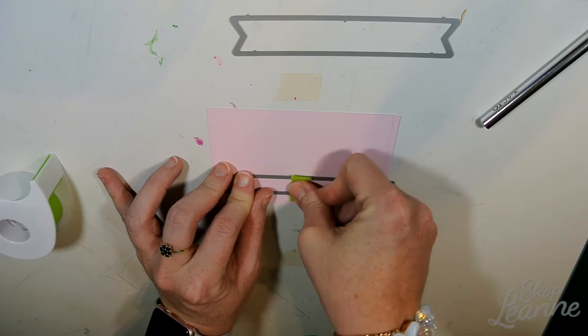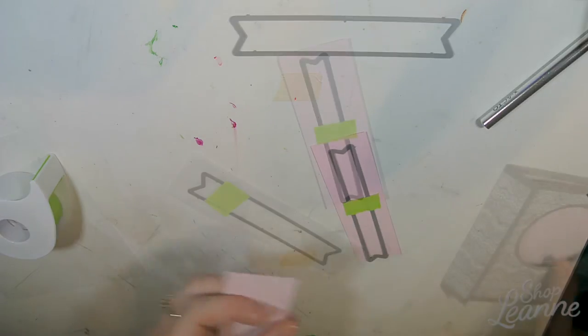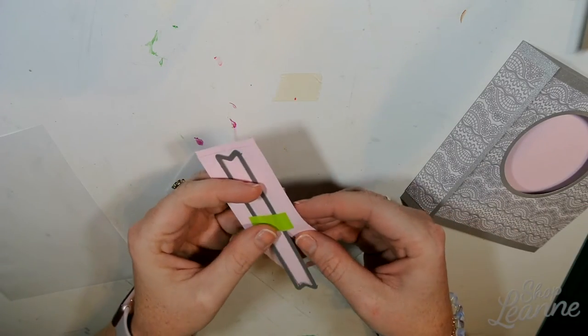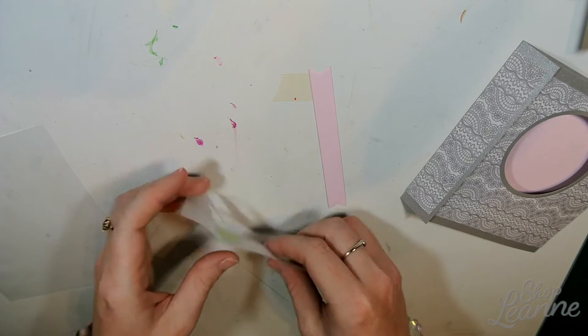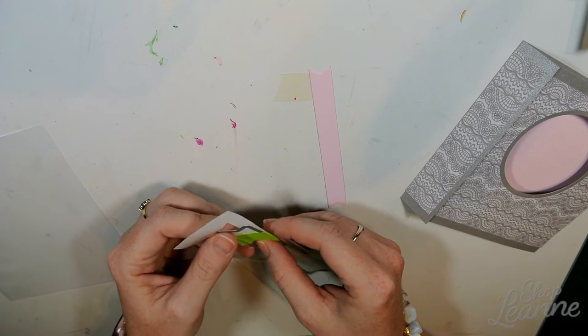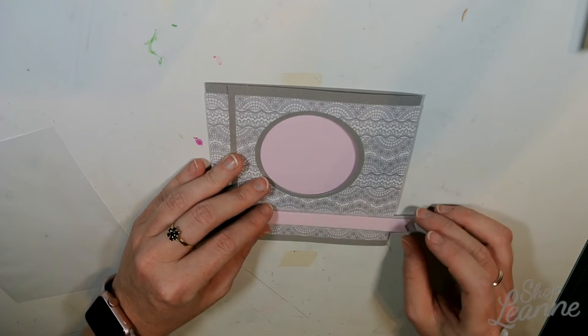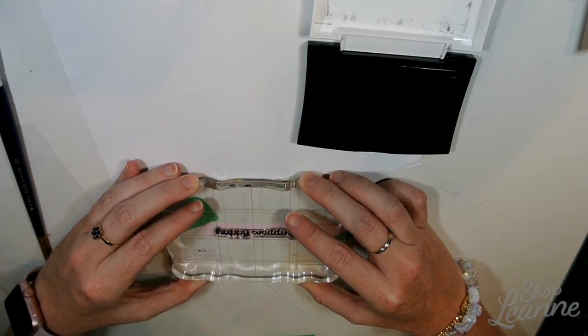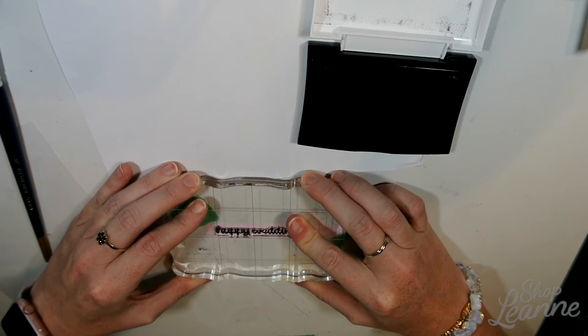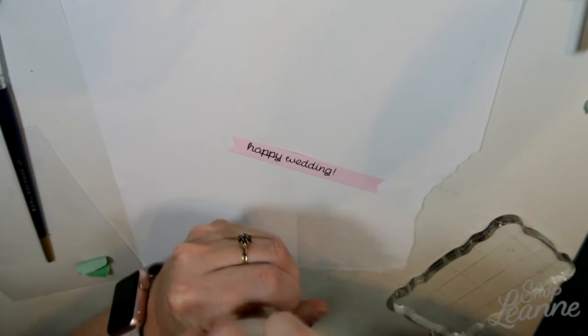Now it's time to do the sentiment banners. I'm going to do one in vellum and one in pink linen. I've used the smaller template to cut out the pink linen and the larger one for the vellum piece. I'm just carefully popping those out and double-checking the spacing. I'm using the sentiment from the Happy Wedding set.